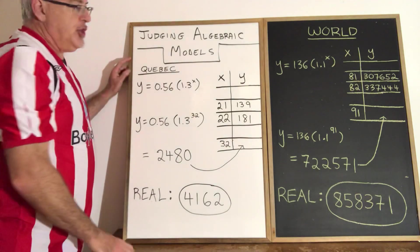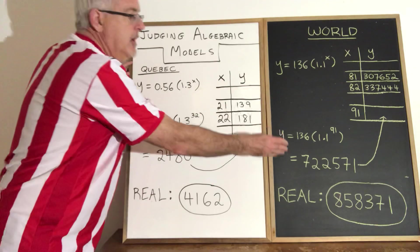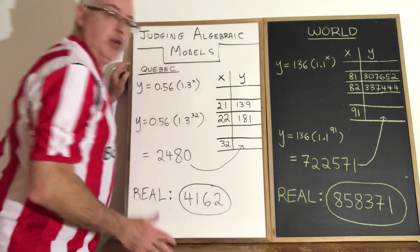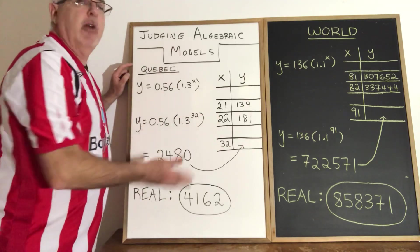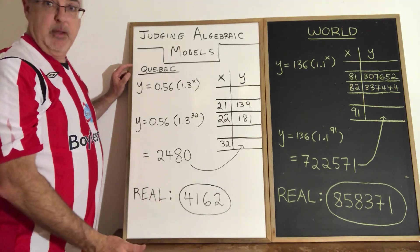What these models achieved is they showed that since the predicted values are actually pretty close to the real values, they showed that we were probably right when we decided it was an exponential model in the first place.